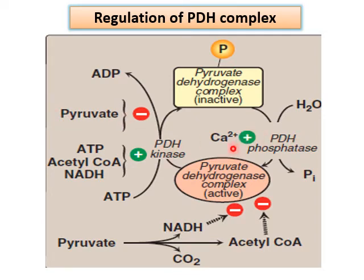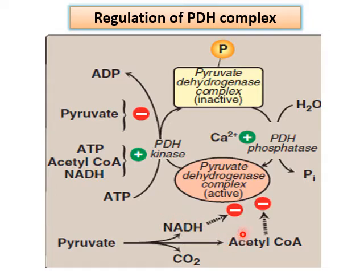High levels of calcium can trigger PDH phosphatase, resulting in activation of the PDH complex from its inactive form. There are also two direct inhibitors of the PDH complex — NADH and acetyl CoA — which, when present in high concentration, can directly inhibit the pyruvate dehydrogenase complex without acting on kinase and phosphatase.